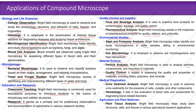In medical diagnostics, bright field microscopy is used for urine sediment analysis — examining urine for cells, crystals, and other components — and in hematology for evaluating blood cells and diagnosing blood-related disorders. In agriculture and plant sciences, it helps study plant structures, cells, and tissues in various research applications.